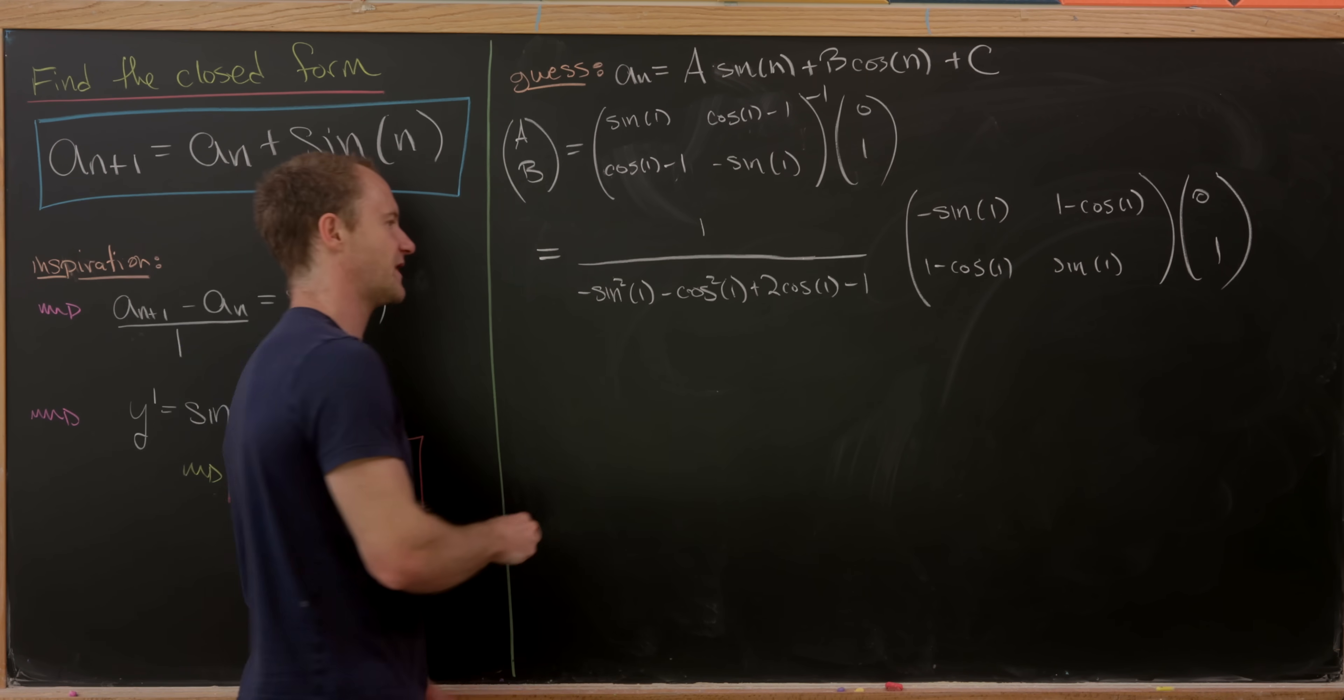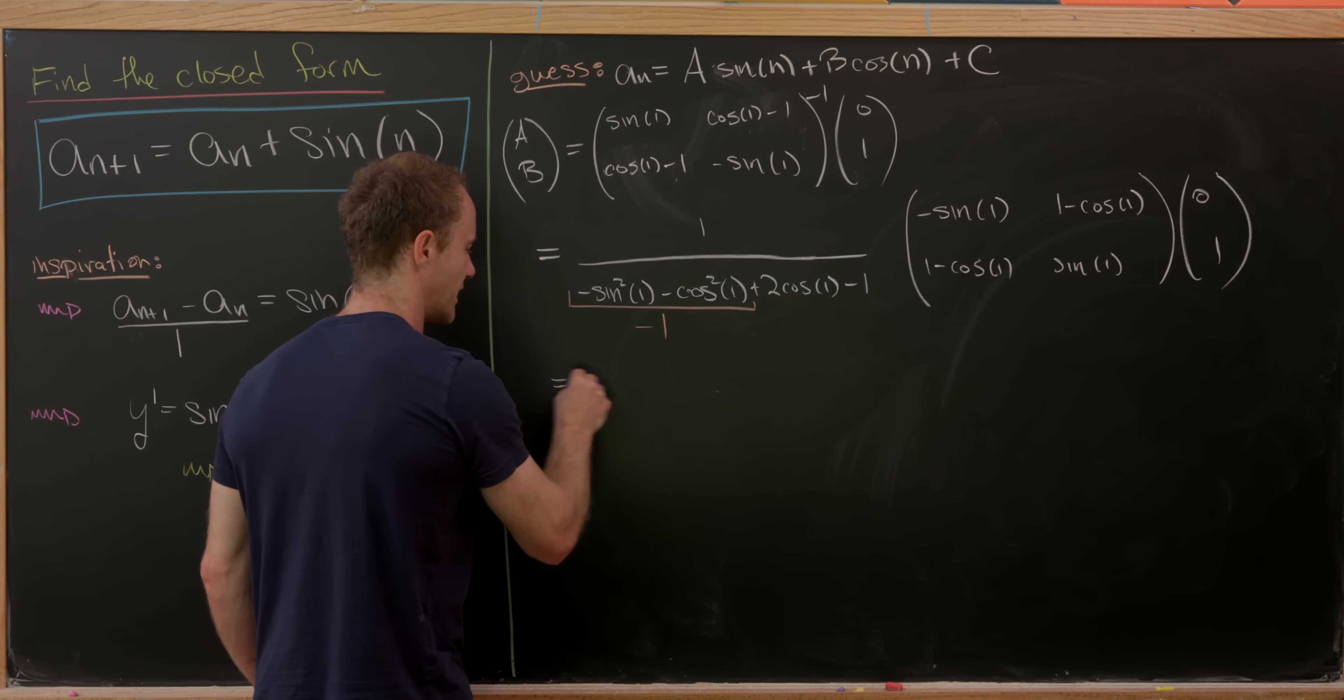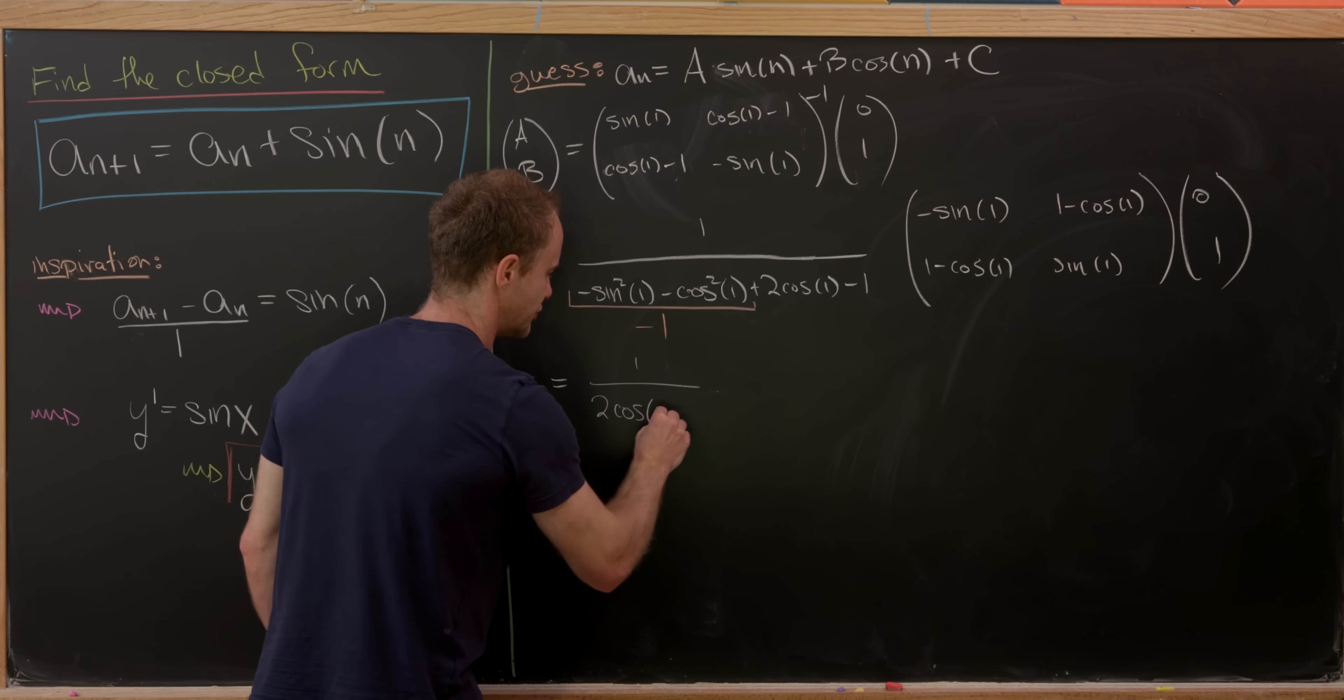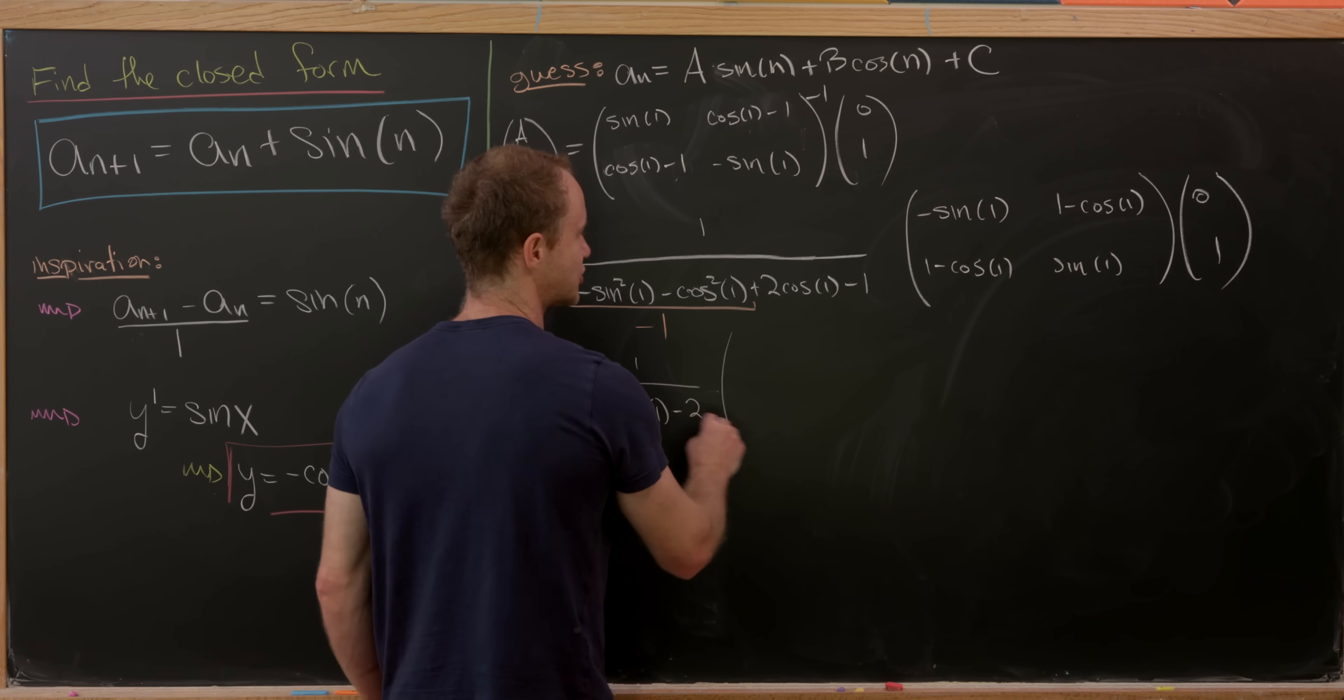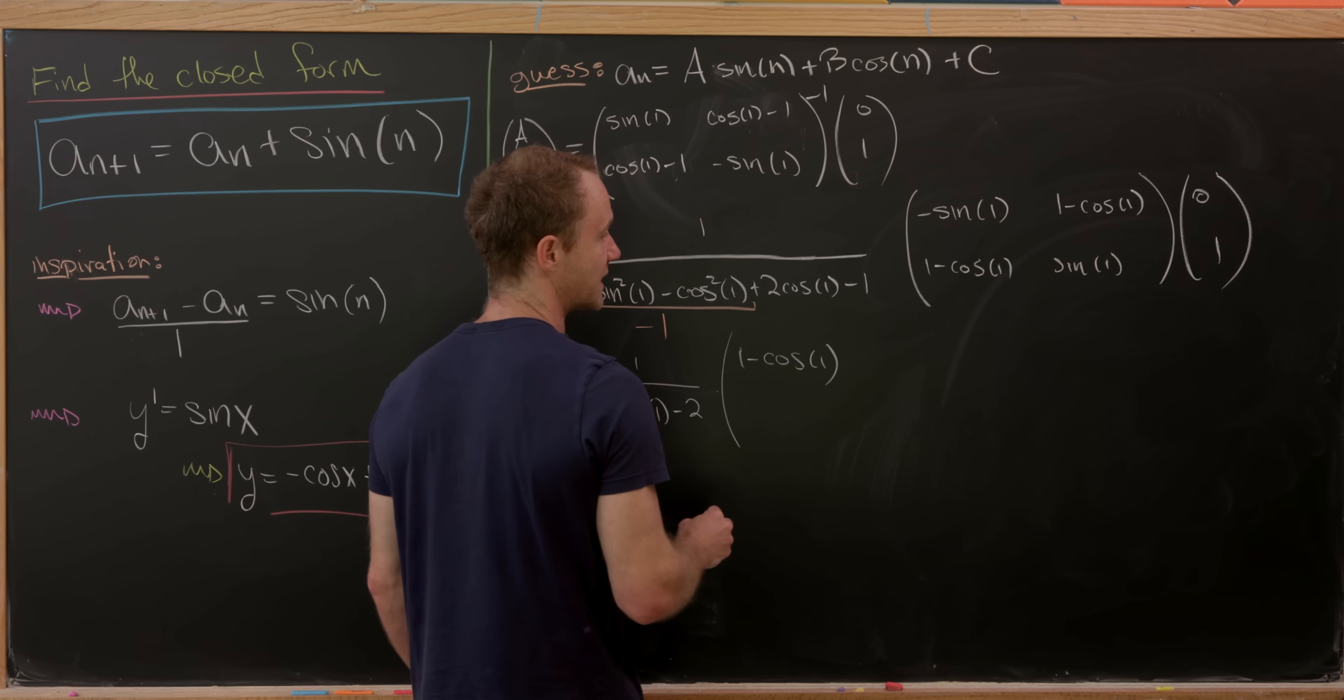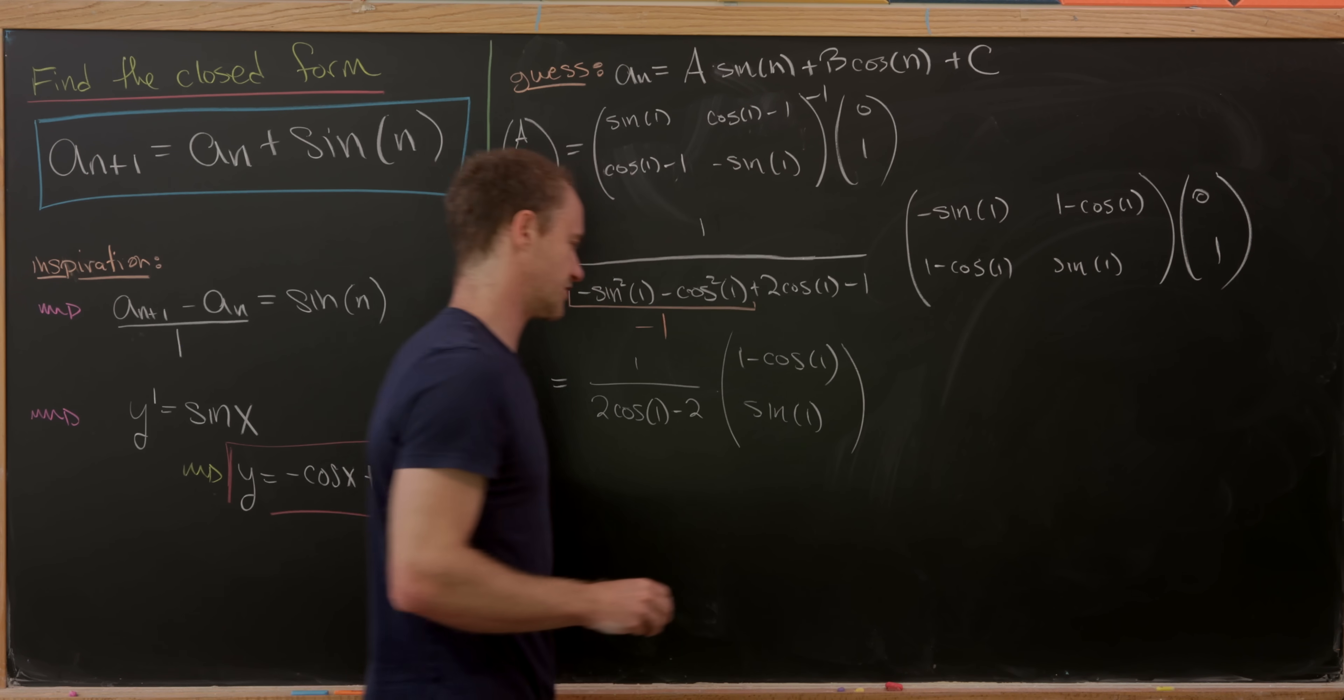But now by the Pythagorean trig identity, we know that minus sine squared minus cosine squared is simply 1. So that means we can simplify this thing out front as 1 over 2 cosine of 1 minus 2. Then next up, we can do that matrix vector multiplication. And that'll leave us with 1 minus cosine of 1 in the upper entry. And then let's see the sine of 1 in the lower entry.